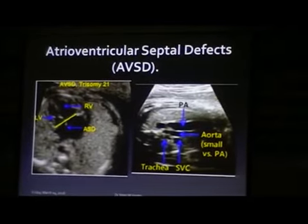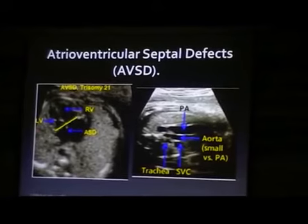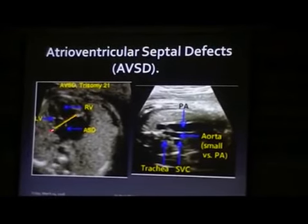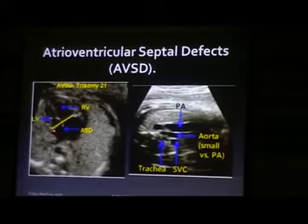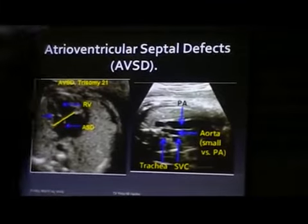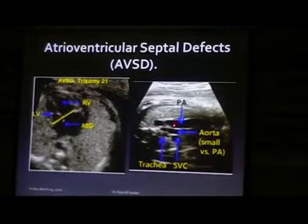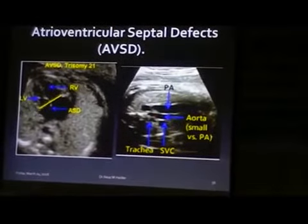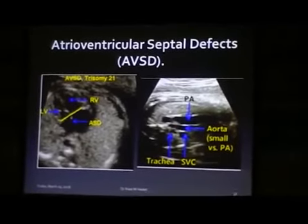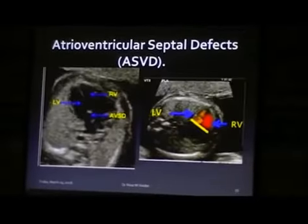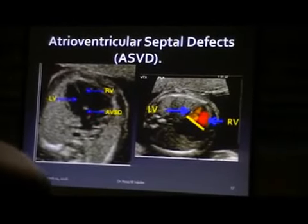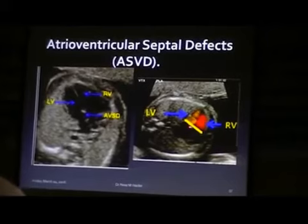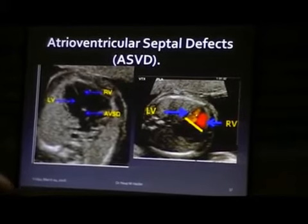These are the atrioventricular septal defects — this is the alignment of the valves. This is the atrioventricular septal defect, and this is the pulmonary artery and aorta with small aorta. This is the atrioventricular septal defect, and this is the partial atrioventricular septal defect.